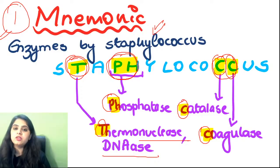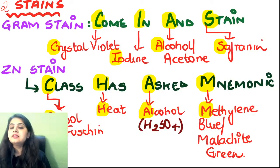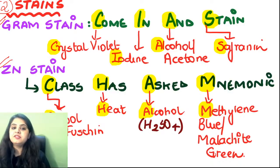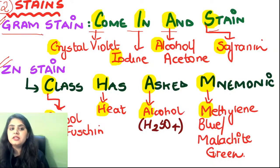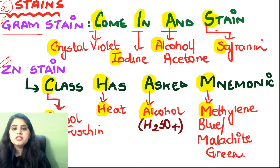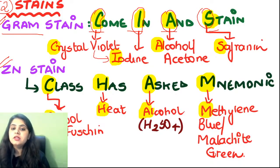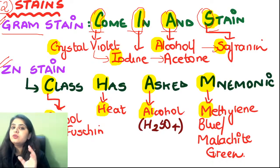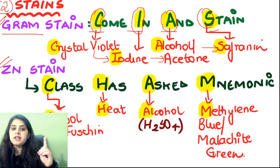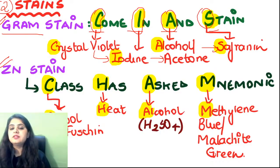Mnemonic two: staining protocol of gram stain. Every day I'll share two mnemonics for random recall. The gram stain mnemonic is 'come in and stain' — C for crystal violet, I for iodine, A for alcohol or acetone (decolorizer), S for safranin. That sequence helps you arrange gram staining steps correctly.